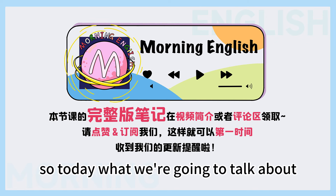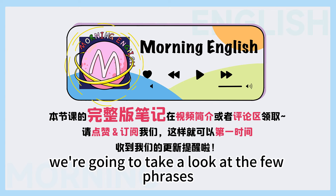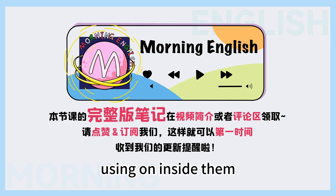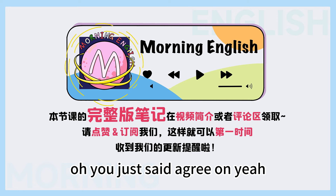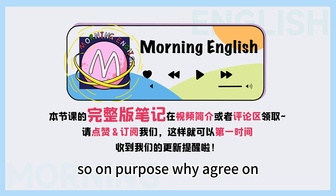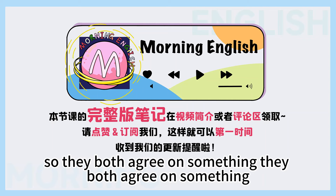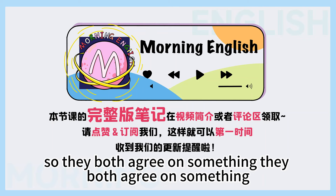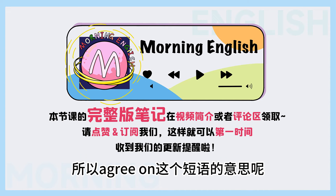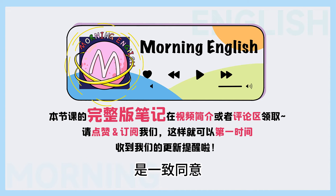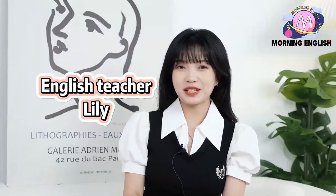So today what are we going to talk about? Well, today we're going to take a look at a few phrases using 'on' inside them. Oh, you just said 'agree on' — on purpose! So what does 'agree on' mean? Well, agree on is when two sides have the same opinion, so they both agree on something. Agree on，这个短语的意思呢，是一致同意。 Welcome to Morning English.